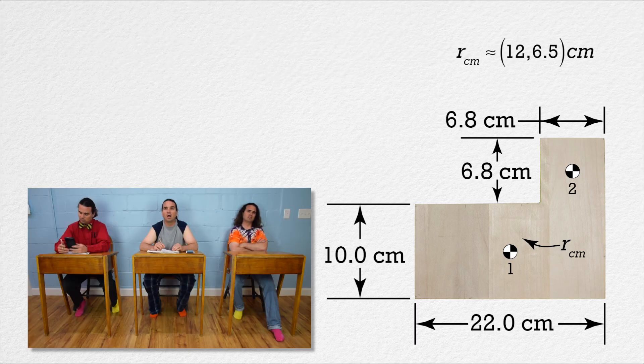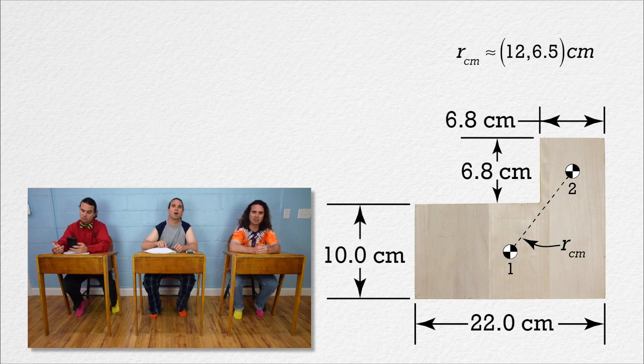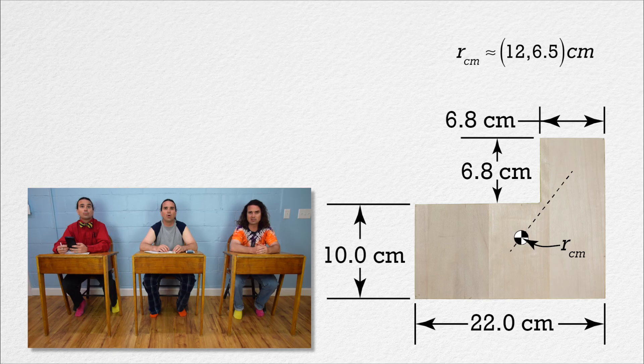Um, the center of mass should be somewhere between the two centers of masses of the two pieces, and should be closer to the more massive piece 1, and that is where we determined the center of mass to be, so that makes sense. Great Bo.